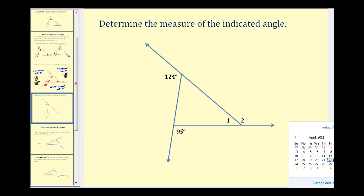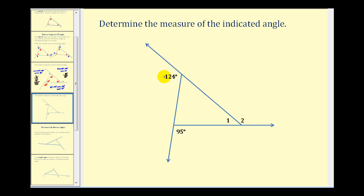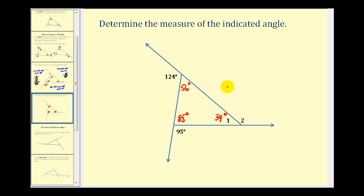Let's take a look at another example — this one will go a little bit quicker. The interior and exterior angles form a linear pair, so their sum is 180 degrees. 180 minus 124 gives us 56 degrees for that angle, and 180 minus 95 gives us 85 degrees. The sum of the interior angles is 180 degrees: 56 plus 85 is 141, so 180 minus 141 gives us 39 degrees for the third interior angle. Then since angles one and two form a linear pair, 180 minus 39 gives us 141 degrees for angle two.